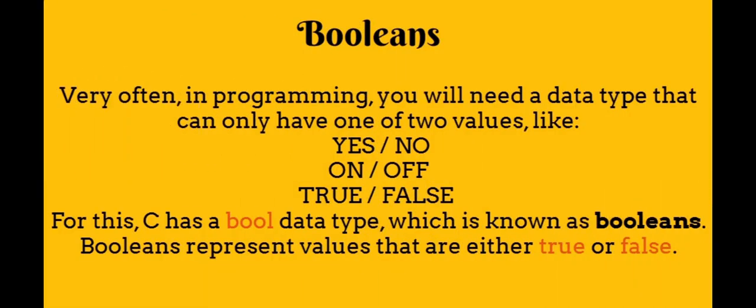Booleans in C. Very often in programming, you will need a data type that can only have one of two values, like yes or no, on or off, true or false. For this, C has a bool data type, which is known as booleans. Booleans represent values that are either true or false.